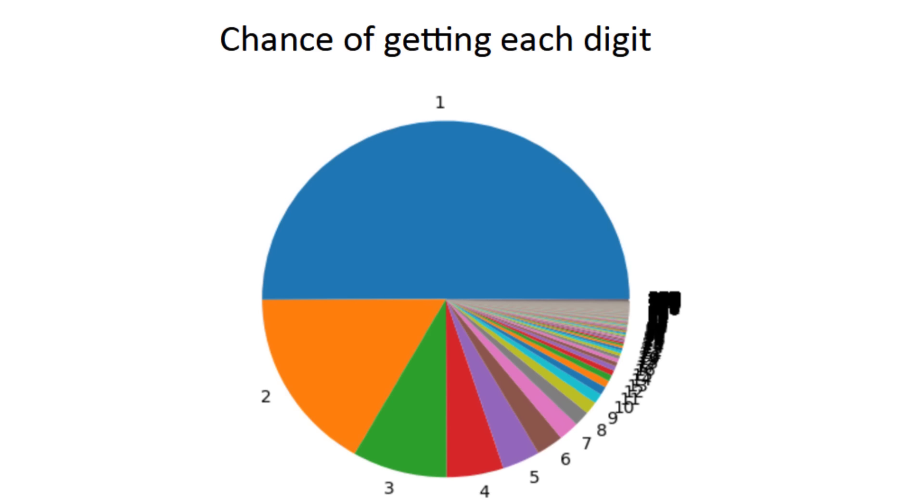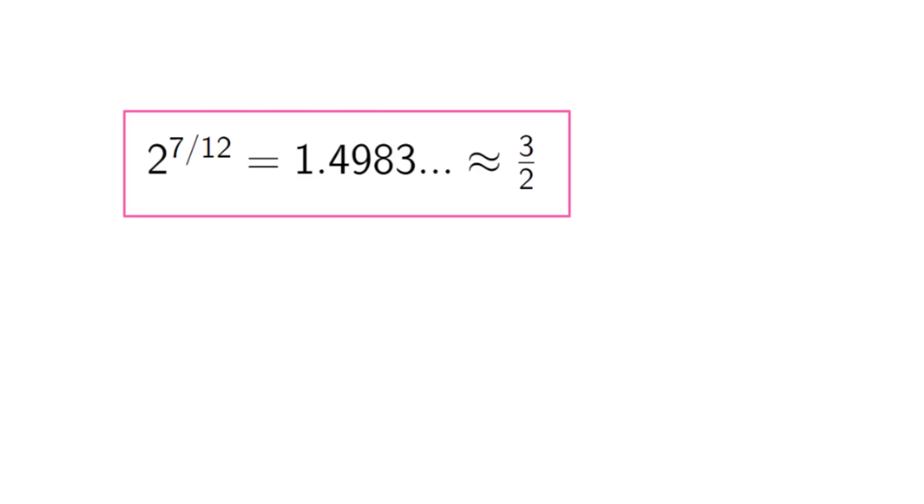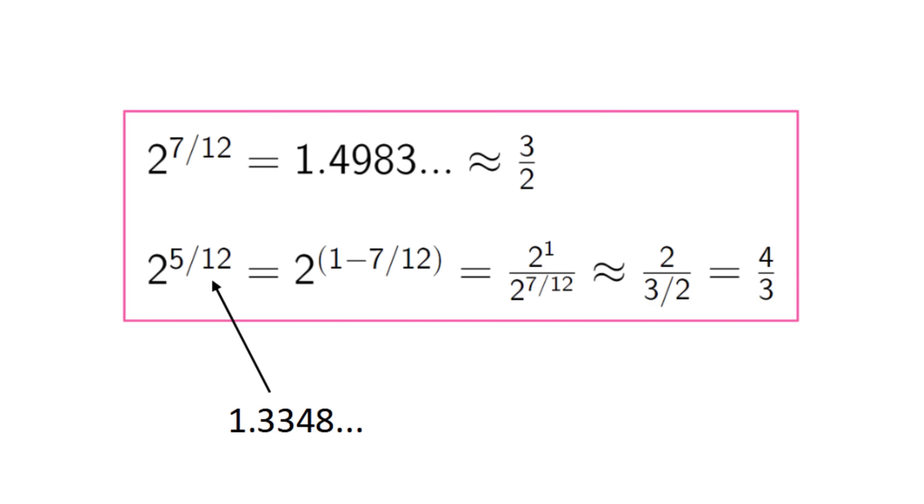I can't really compare it to e, because its continued fraction actually follows a clear pattern. Anyway, another useful coincidence is that 2 to the 7 twelfths is about 1 and a half. This also means 2 to the 5 twelfths is about 1 and a third. Why is this useful?